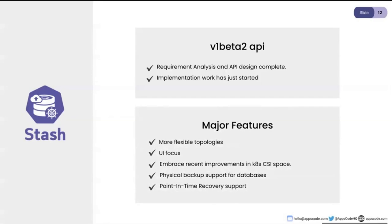One of the key goals is to support more flexible topologies. Today we have a sidecar-based approach and a job-based approach, but it's kind of one or the other. In some cases you need both — for example, you might want to take a MySQL dump or page backup for a MySQL database, but you also may want to run continuous archiving using bin logs. Today that isn't really possible; you can only do one or the other.